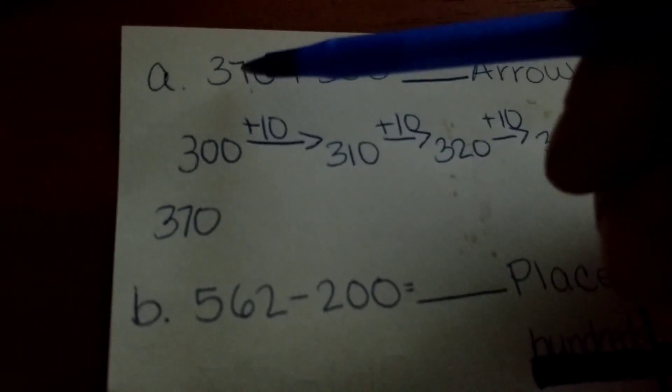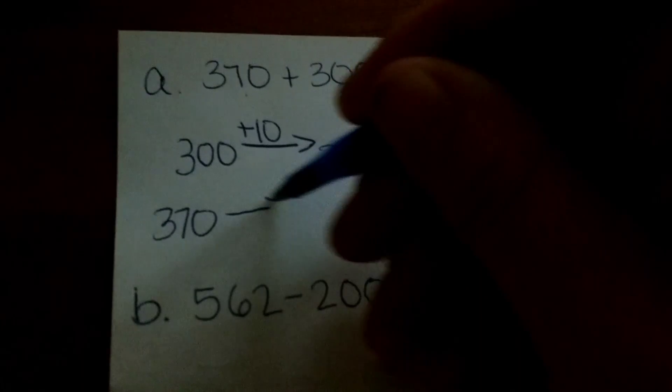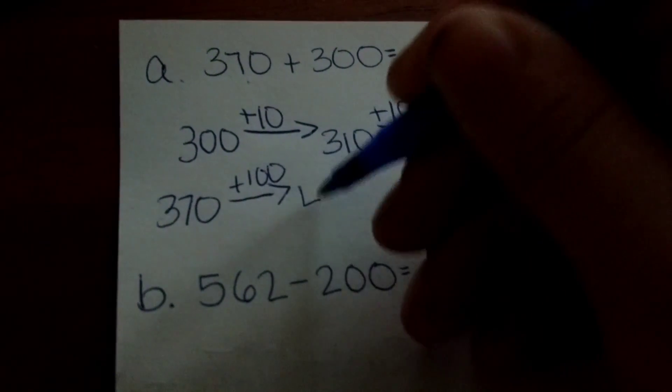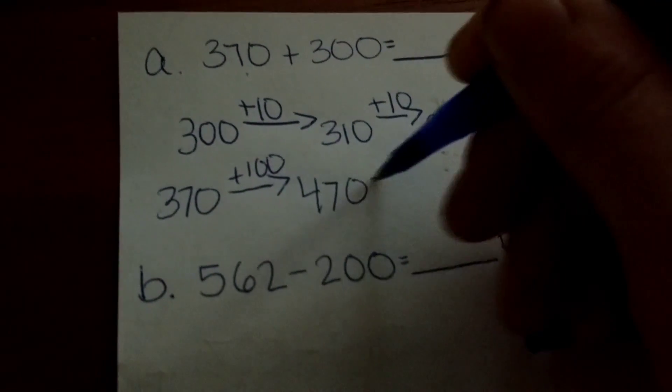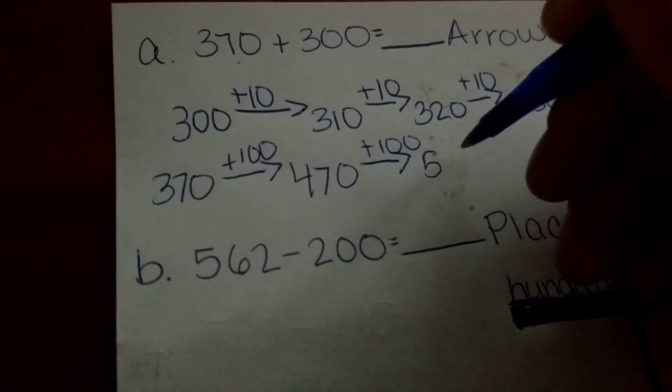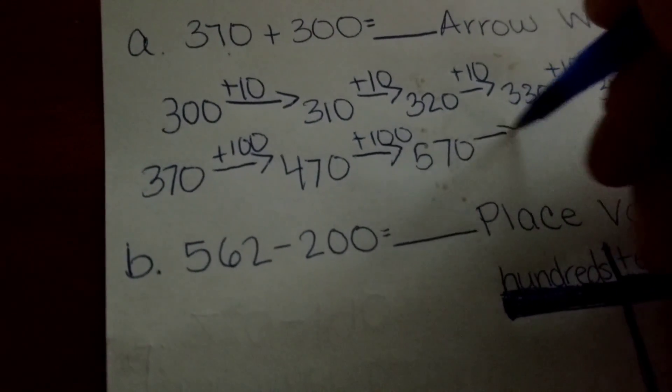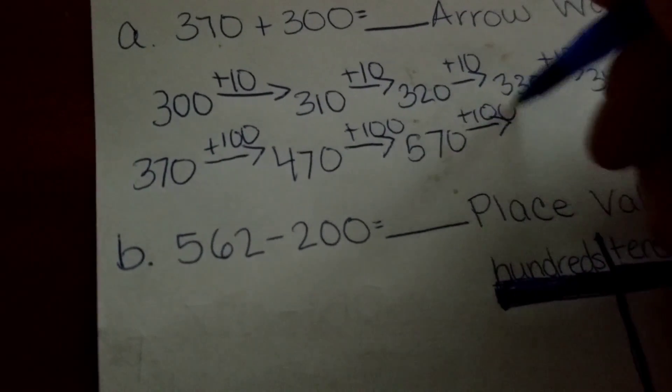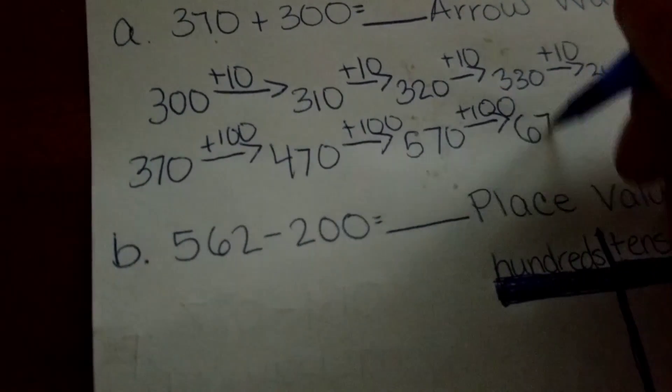We have 3 hundreds. So add in 100, that makes 470. Add in another 100, that makes 570. Add in your last 100, that makes 670.